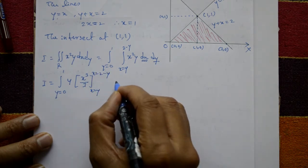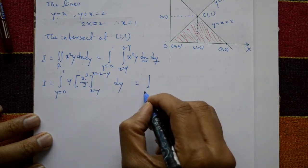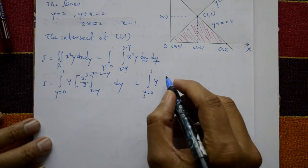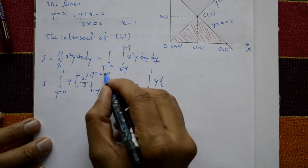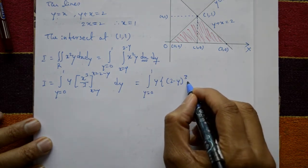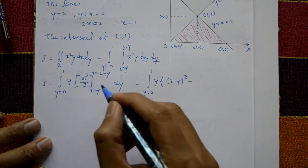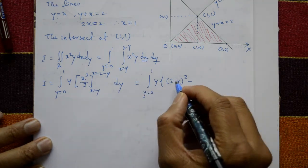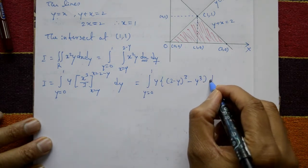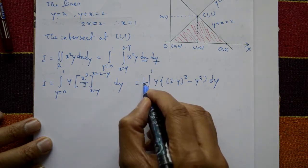With y from 0 to 1: apply the upper limit x equals 2 minus y, giving (2 minus y) cubed, minus the lower limit x equals y, giving y cubed, all with respect to y. The factor 1/3 is a constant taken outside the integral.